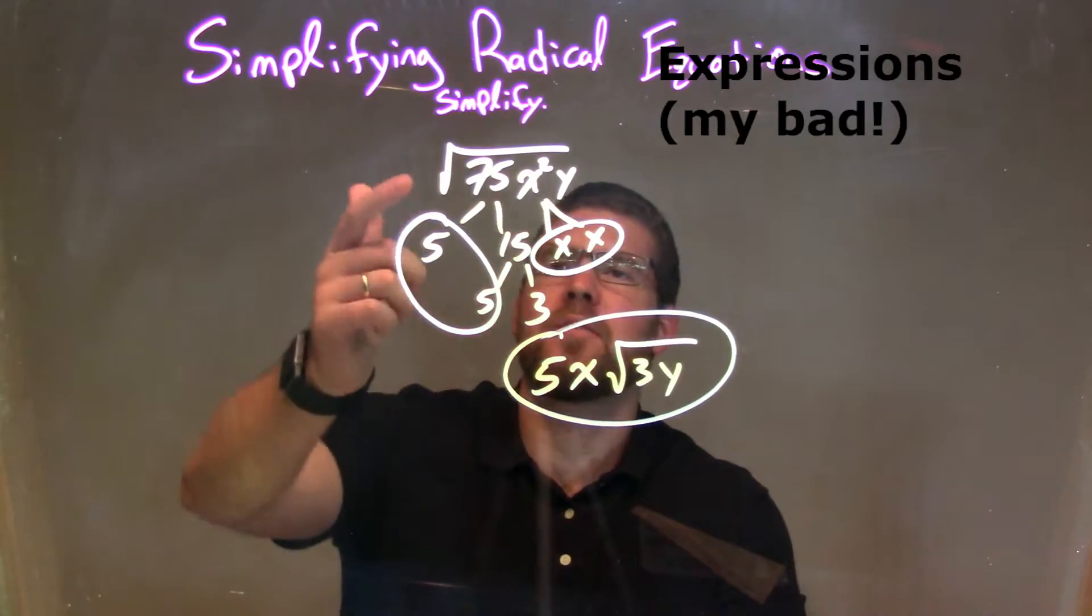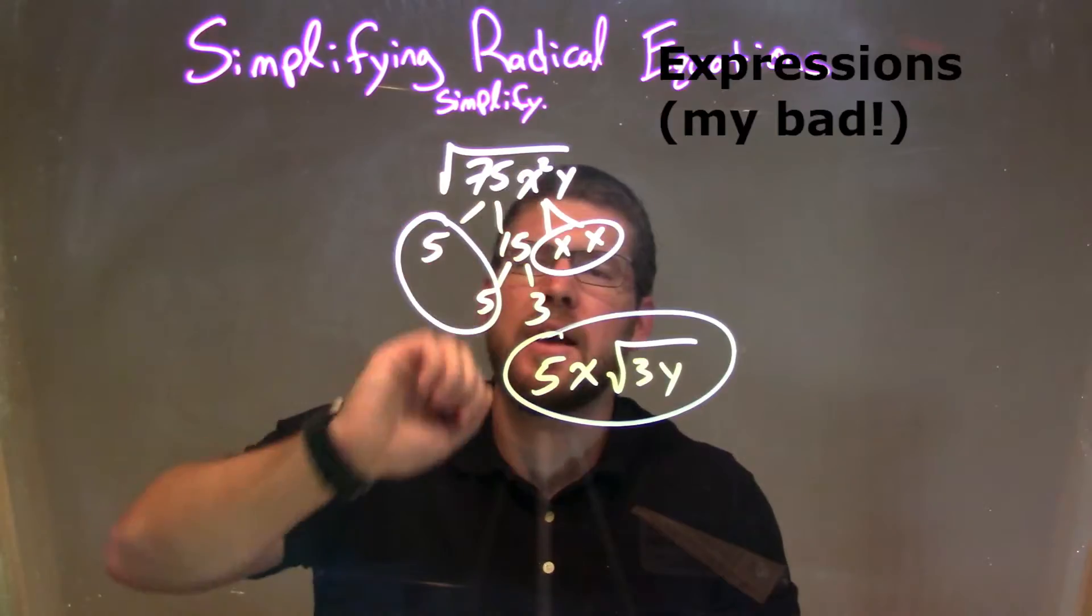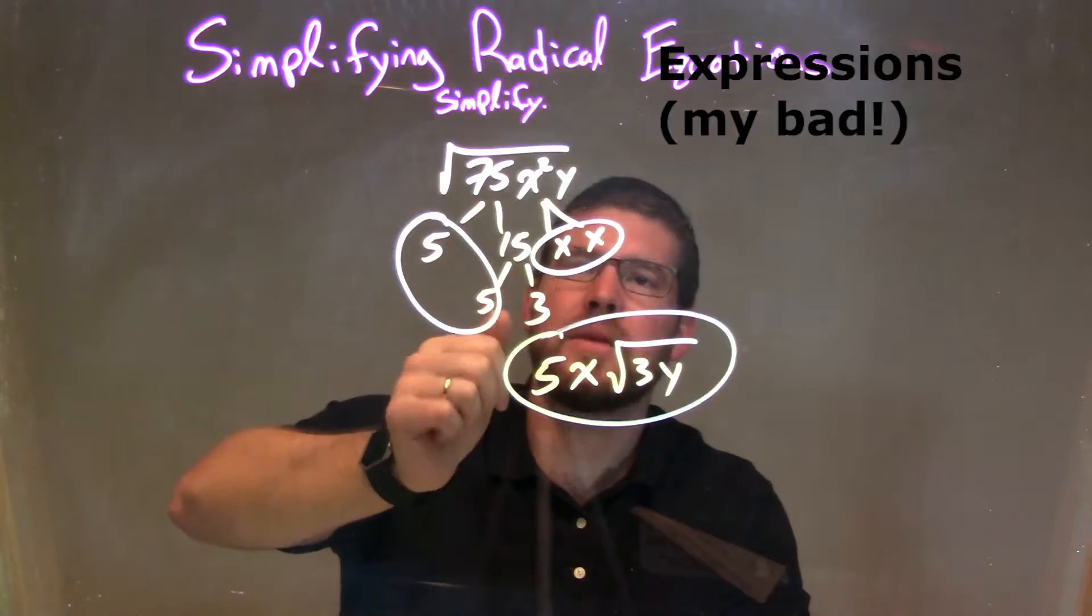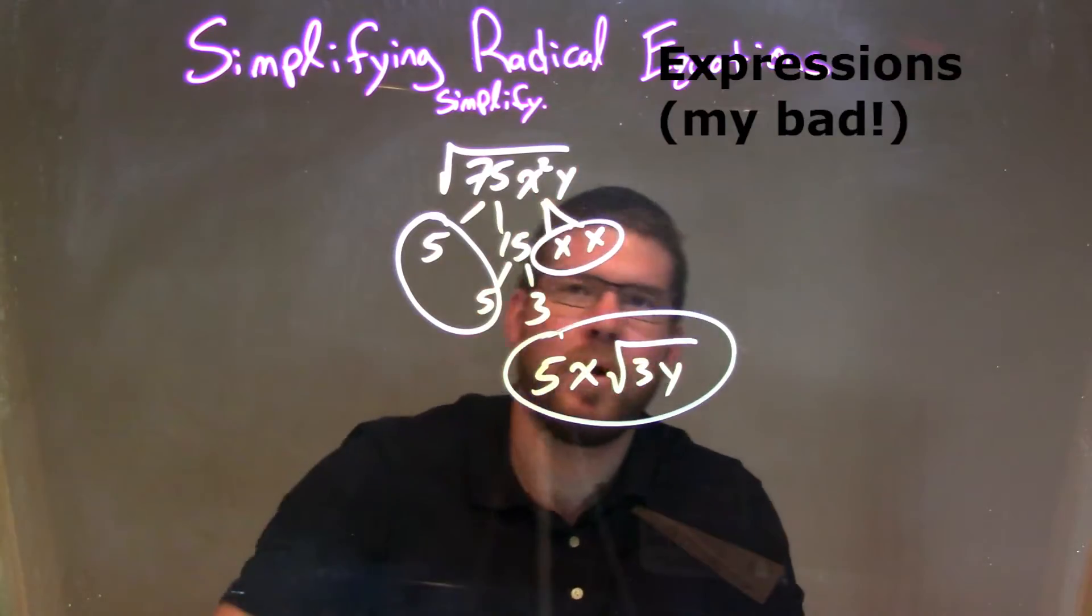So, let's recap. We're given the square root of 75 x squared y, and we need to simplify that. My prime factorization of 75 is 5 times 5 times 3, and x squared is x times x, and y is just by itself.